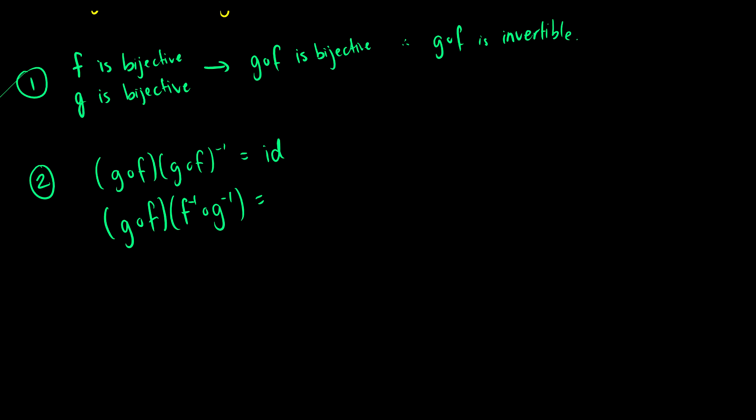So first we'll use the associativity law and we're going to group our f and f⁻¹ together. And with this, we're going to produce the identity function. And of course, the identity function maps everything to itself, so we can get rid of it there.